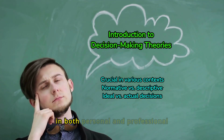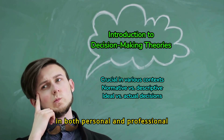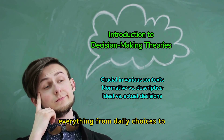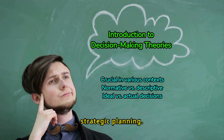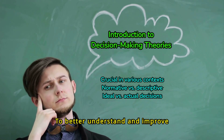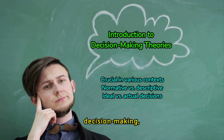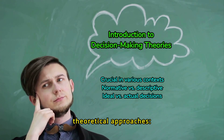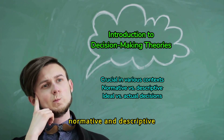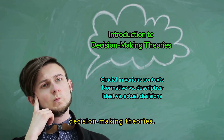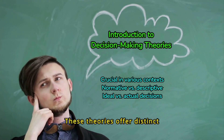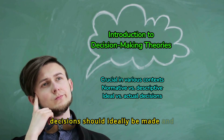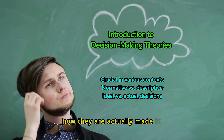Decision-making is crucial in both personal and professional contexts, affecting everything from daily choices to strategic planning. To better understand and improve decision-making, researchers have developed two primary theoretical approaches: normative and descriptive decision-making theories. These theories offer distinct perspectives focusing on how decisions should ideally be made and how they are actually made in practice.